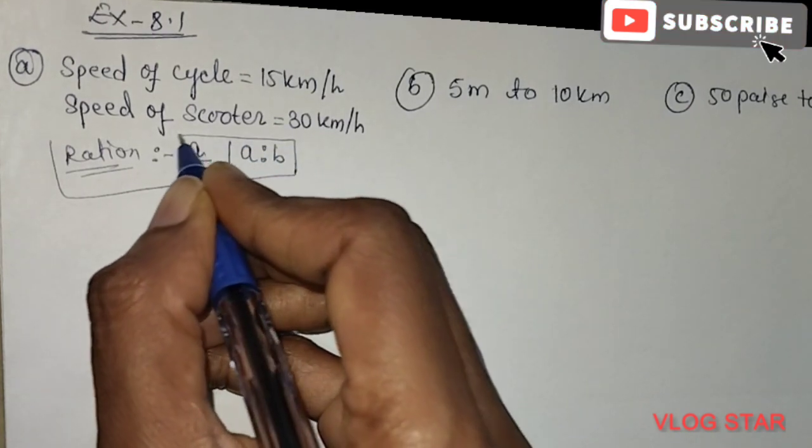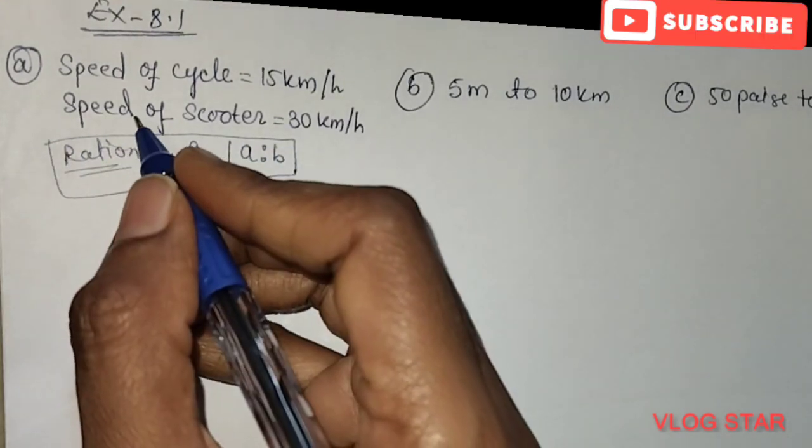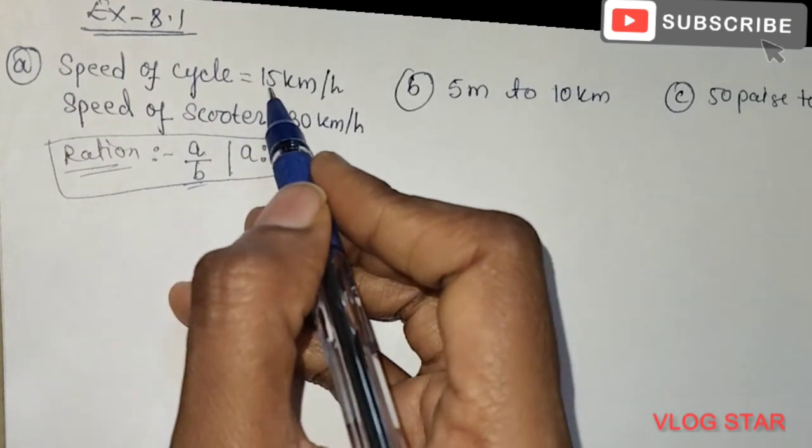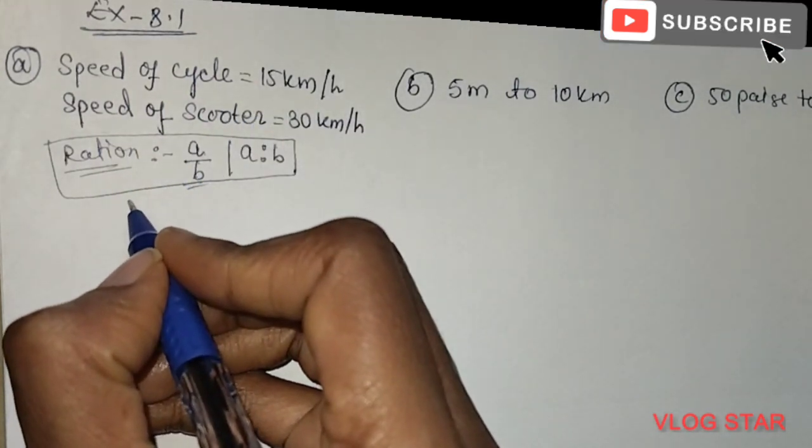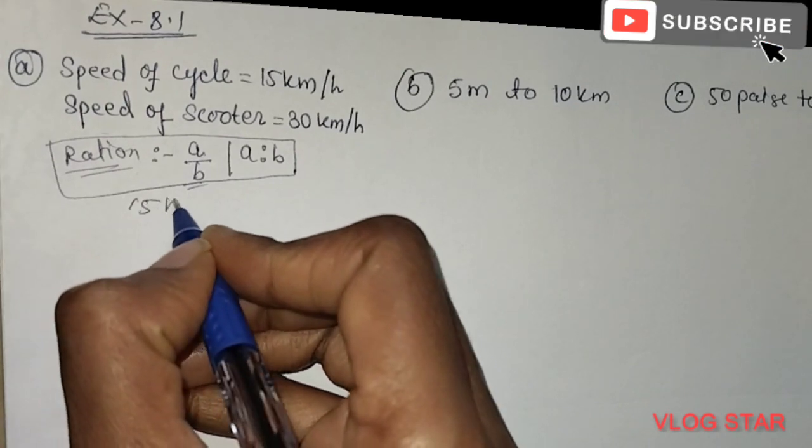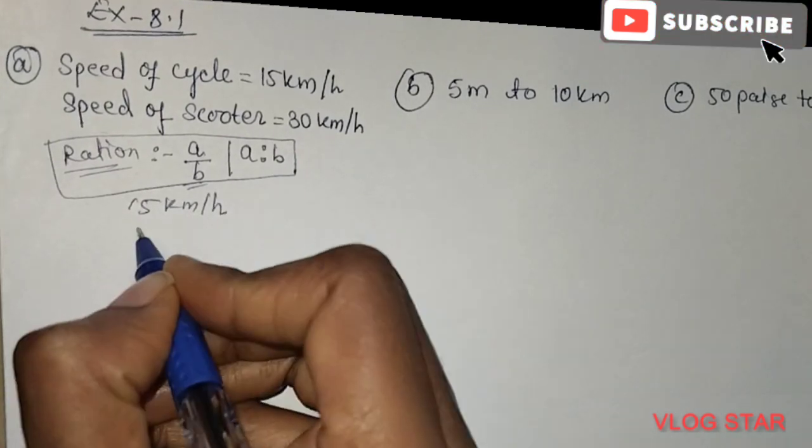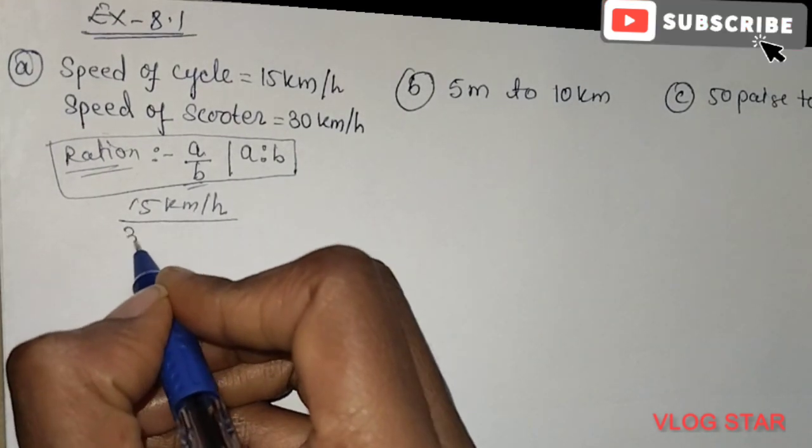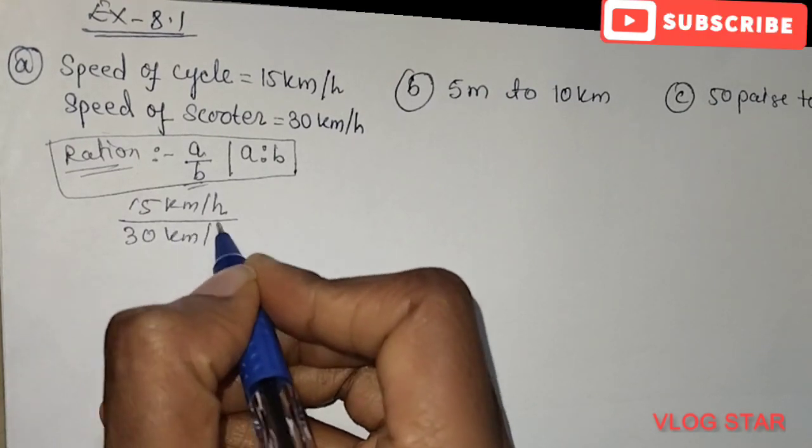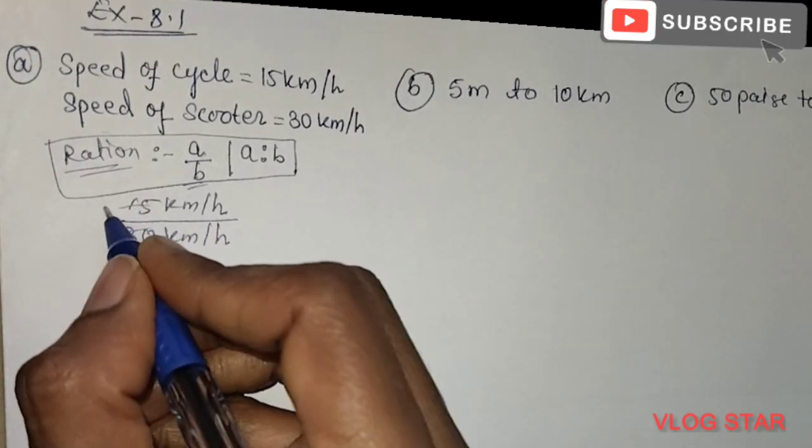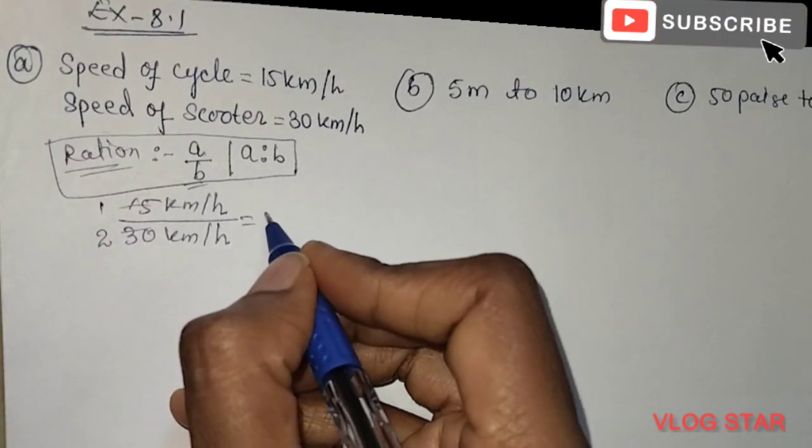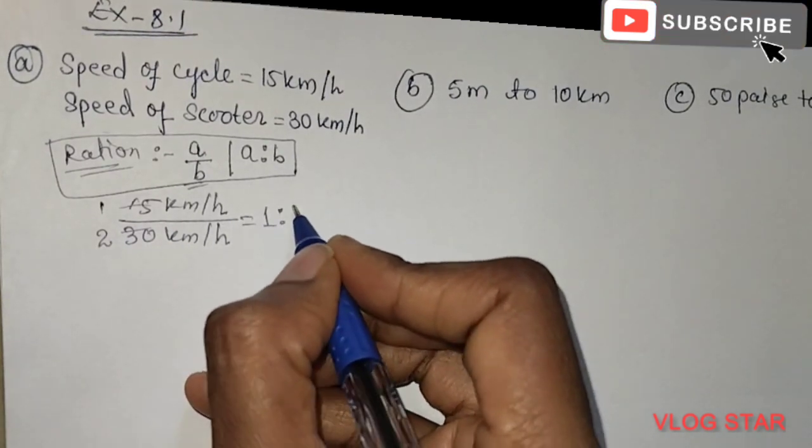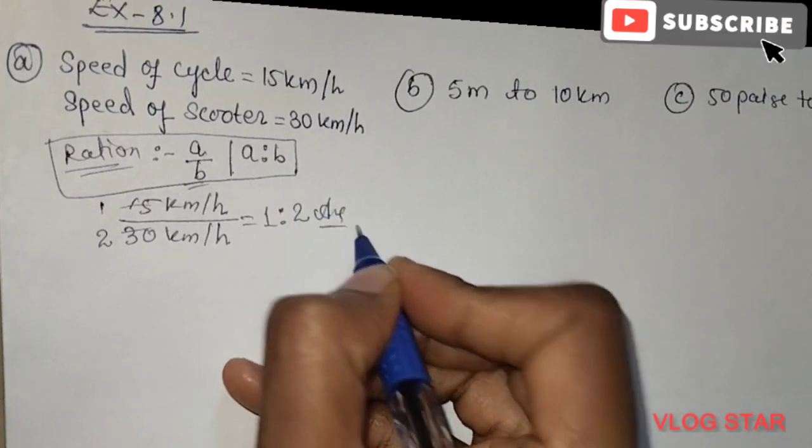In this question, we have to find the ratio of speed of a cycle to speed of a scooter. Speed of a cycle is 15 kilometer per hour and speed of a scooter is 30 kilometer per hour. The ratio is 15 to 30. When we cancel it, we get 1 is to 2. This is our answer for the first question.